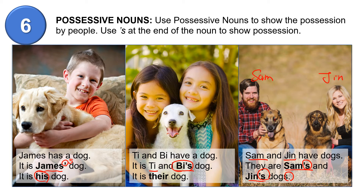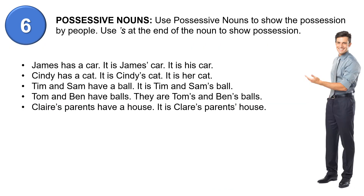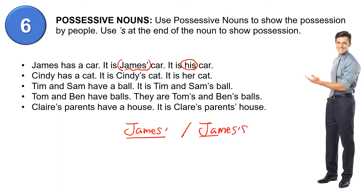So one more time: James has a dog — it is James' dog, it is his dog. Ty and Bai have a dog — it is Ty and Bai's dog, it is their dog. Sam and Jin have dogs — they are Sam's and Jin's dogs. Now, when the name is ending with an S, we can put apostrophe only or apostrophe S. Either one is okay.